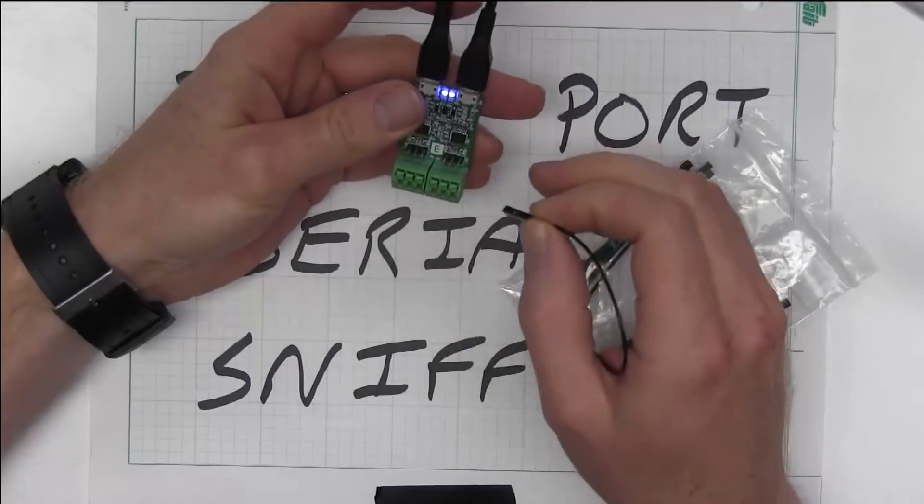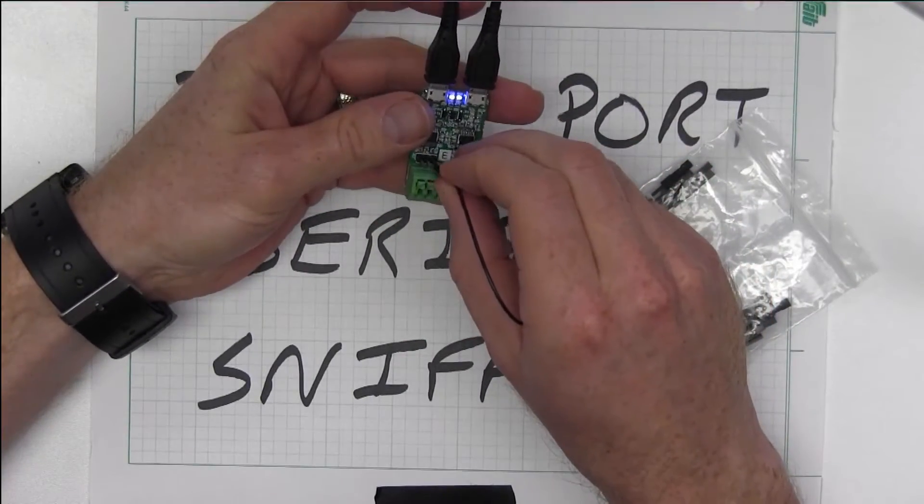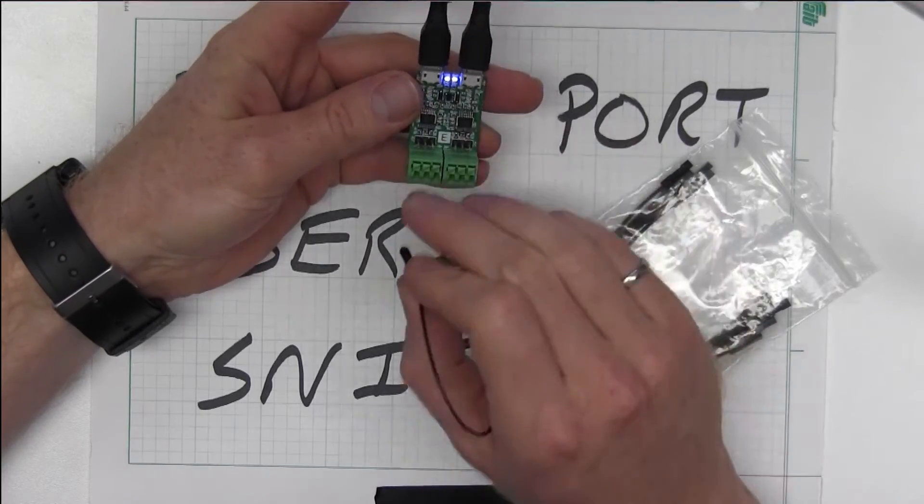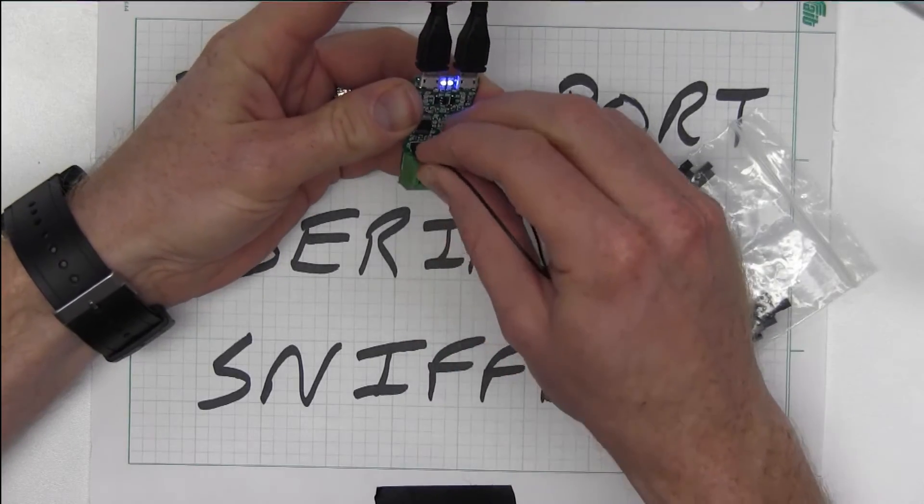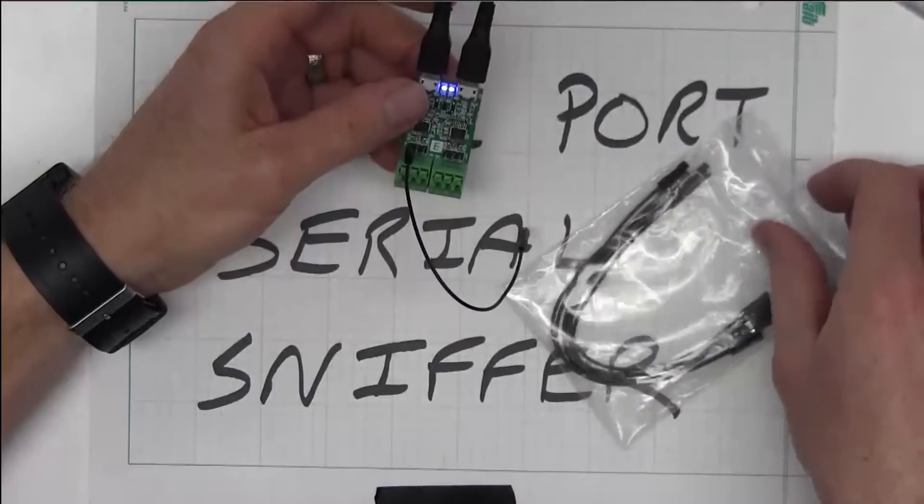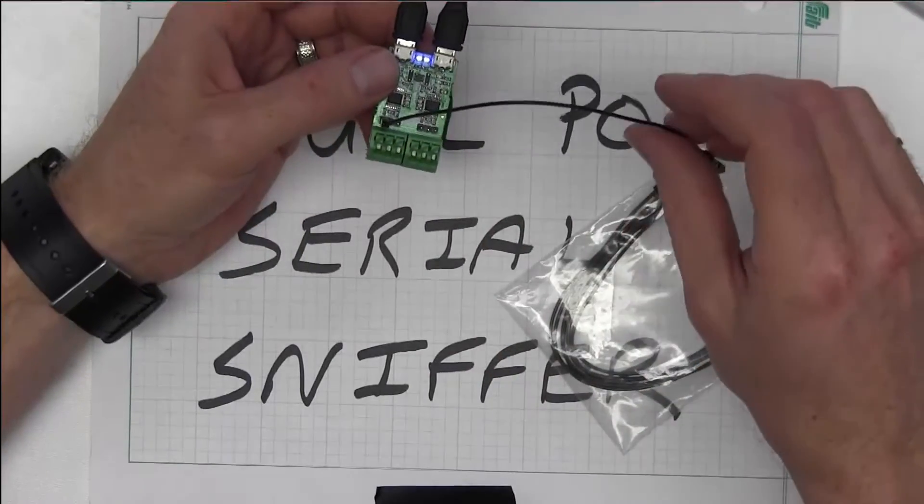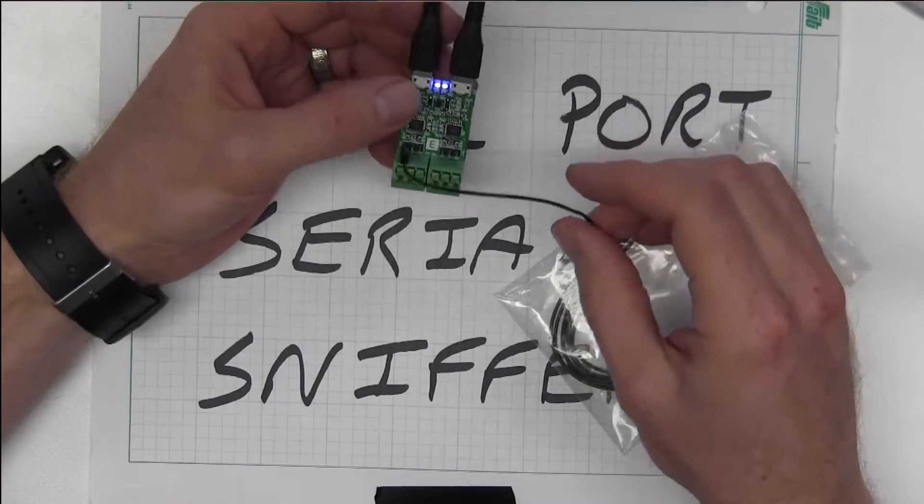Obviously, you need to bring ground through. Ground is connected here, so you could bring one ground through and then use the RX line on this one and the RX line on that one, and connect those to the RX and the TX lines on the target board.